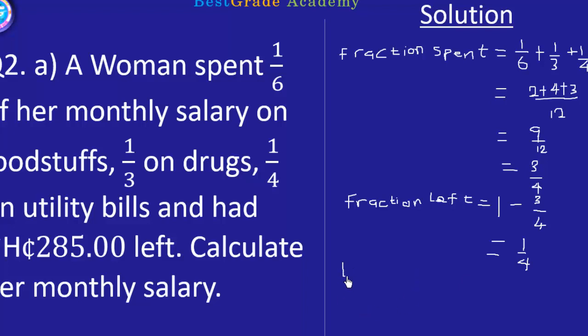Now we simplify this to obtain 1/4. So we don't know the salary, so let x be her salary. Then one-fourth of x will correspond to 285 Ghana cedis.